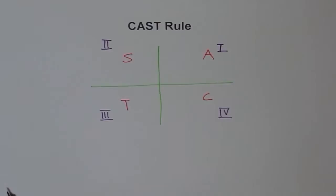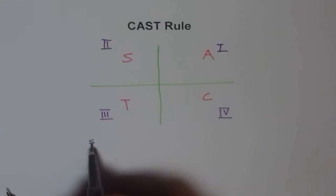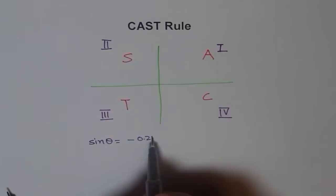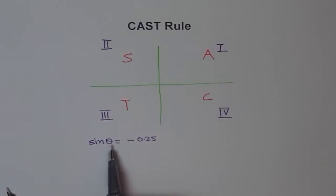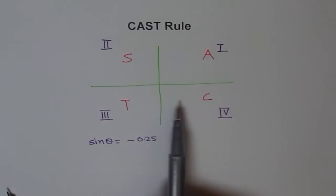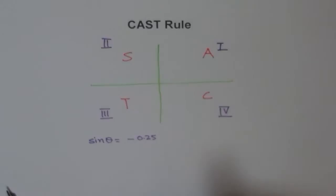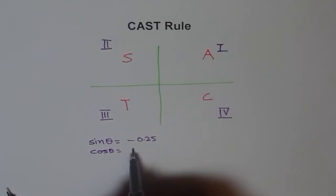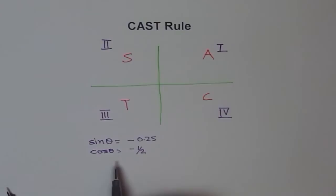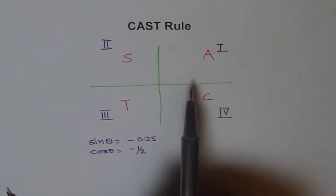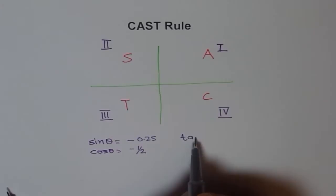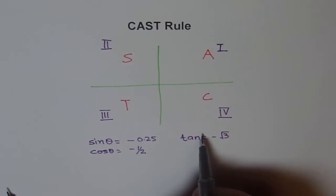For example, if sine θ = −0.25, that means theta could be an angle in quadrant 3 or 4, because those are the two quadrants where sine is negative. If cos θ = −1/2, theta lies in quadrant 2 or 3, not in quadrant 1 or 4 where cosine is positive. If tan θ = −√3, then theta is in quadrant 4 or 2, but not in quadrant 3 or 1.